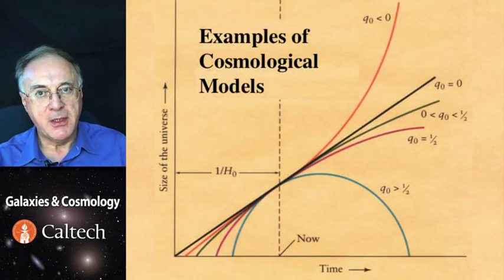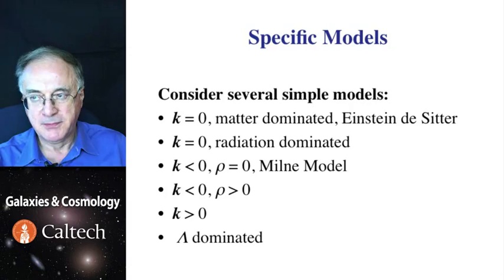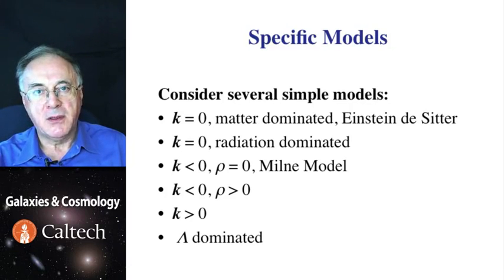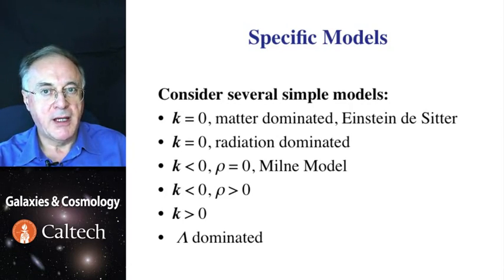We're now ready to start evaluating some cosmological models. We'll consider several special cases. The first one would be a flat, spatially flat matter dominated model, which is also known as the Einstein de Sitter model.